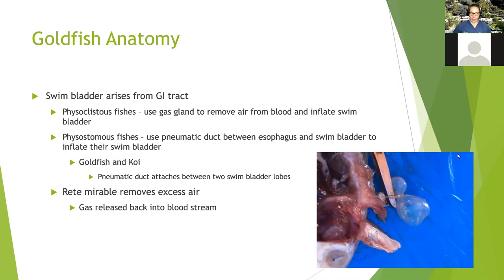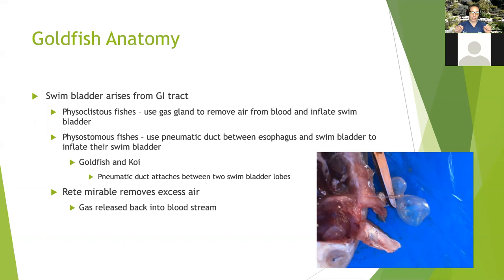When fish are developing, the swim bladder arises from the GI tract — it starts as an outpocket that may or may not retain its patency. There are two groups: physoclistous fish, where the swim bladder pinches off entirely from the GI tract and uses a gas gland to secrete air from the bloodstream into the swim bladder; and physostomous fish, which retain a remnant connection — the pneumatic duct — linking the esophagus to the swim bladder. Goldfish and their koi cousins fall into this second group. You can see the pneumatic duct connecting right between the cranial and caudal swim bladder chambers.